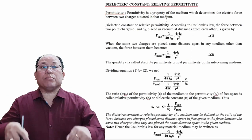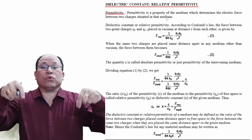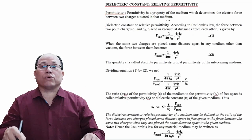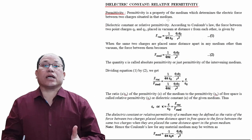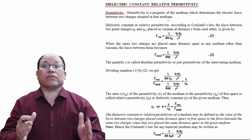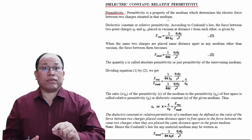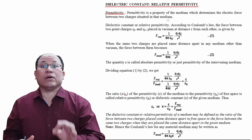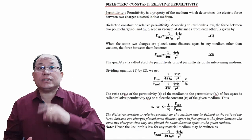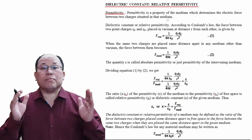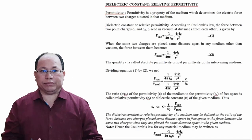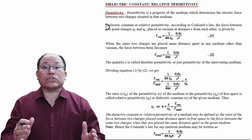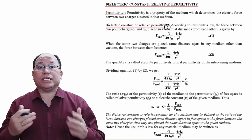If you keep two charges in different mediums, the force between them will have different values because of the property of the medium — that determining factor is called permittivity. So now let us define dielectric constant or relative permittivity.